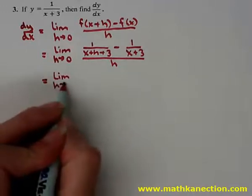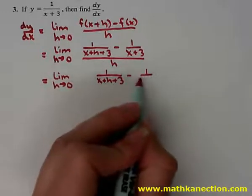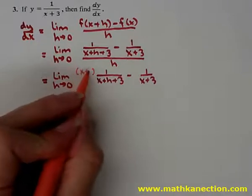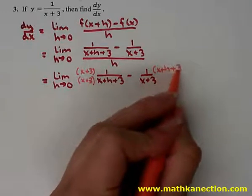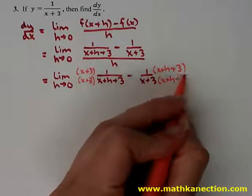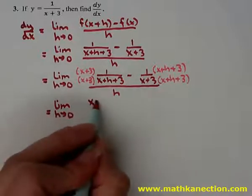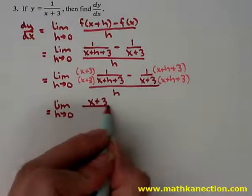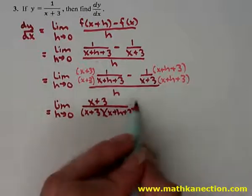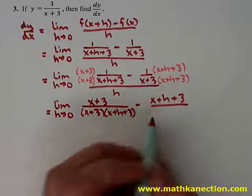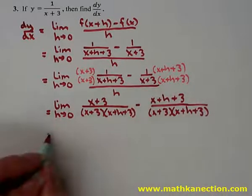So the limit as h approaches 0, we have 1 over x plus h plus 3 minus 1 over x plus 3. We need a common denominator, so multiply the first fraction by x plus 3 in the numerator and denominator, and the second by x plus h plus 3 in the numerator and denominator. That's all over h. Distributing the x plus 3 for the first term over the quantity x plus 3 times x plus h plus 3, then minus x plus h plus 3 over that same denominator, all over h.